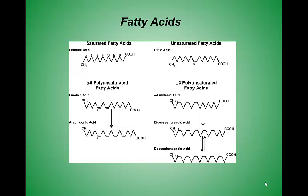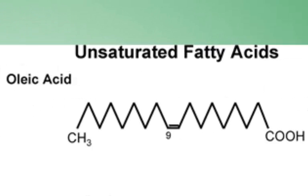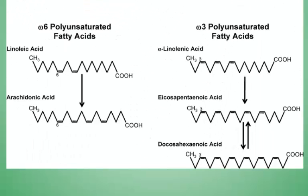Here are structures of additional fatty acids. Palmitic acid is a good example of a saturated fatty acid. Oleic acid is an example of a monounsaturated fatty acid. Linoleic acid, arachidonic acid, and the remaining fatty acids are great examples of polyunsaturated fatty acids. Note that the double bonds are all cis — it is rare to find a trans fatty acid in nature.